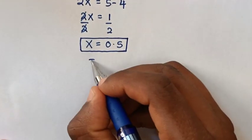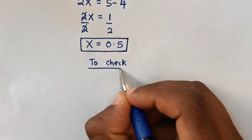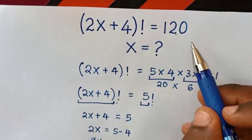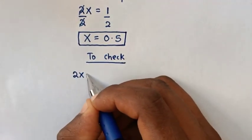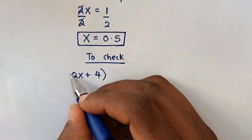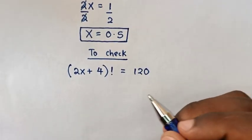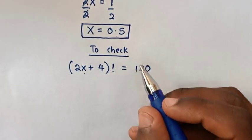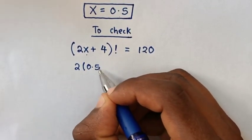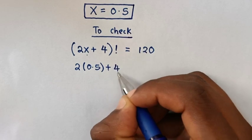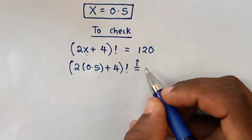Now to check if the value of x is correct from our problem, which is (2x + 4)! = 120. Now we substitute the value of x, which is 0.5. Then our equation will be 2 times 0.5 plus 4 brackets factorial is equal to 120.